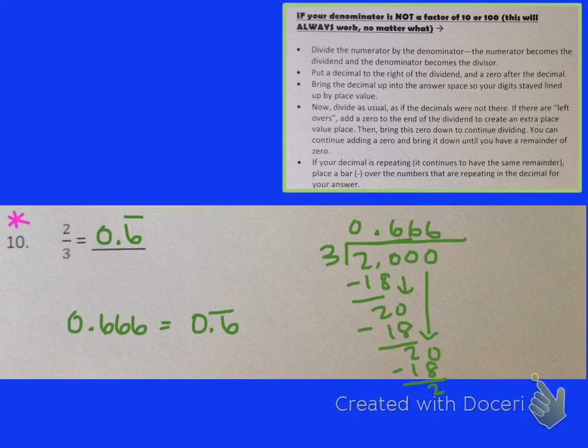And so I would say once you see the same number repeating 3 times in a row, you can go ahead and stop and say, you know what, this is a repeating decimal. I'm going to need to put a bar over this. So our answer here is 6 tenths with a repeating 6. If you have any questions about that, we'll talk about it in class. Good job.